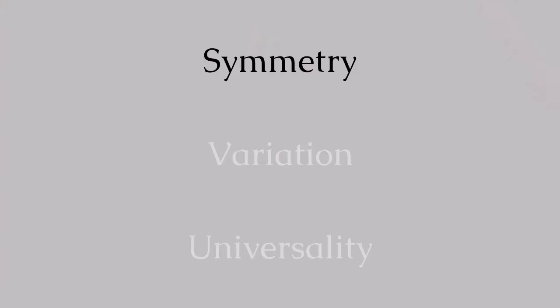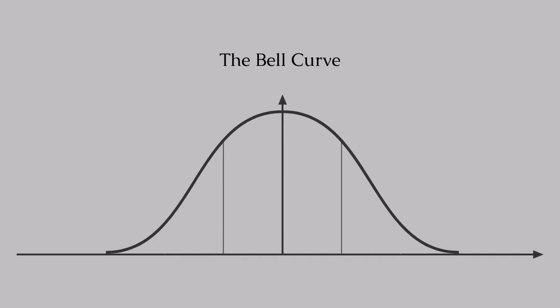At first glance, its symmetry captures your attention. One half of the bell curve serves as a perfect mirror of the other. This symmetry implies that the data flanking the center, or the mean, are evenly spread out. In a perfect bell curve, this even distribution leads to a significant alignment at the peak, where the mean, median, and mode — the three measures of central tendency — are all the same.